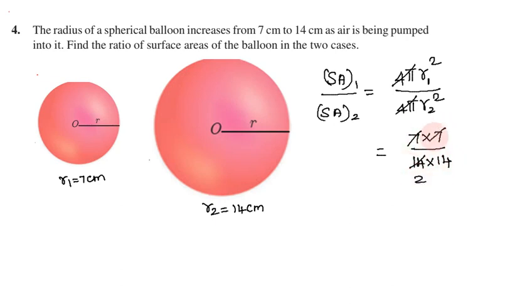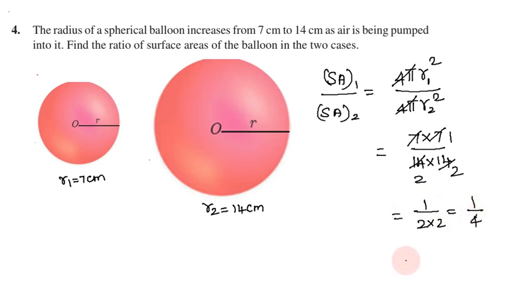Simplifying: 7 over 14 equals 1 over 2, and 7 over 14 equals 1 over 2 again. So the ratio becomes 1/2 × 1/2, which equals 1/4. Therefore, the ratio of surface area in case 1 to case 2 is 1 to 4.